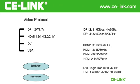For DP 1.2, maximum bandwidth is 21.6 GB per second and the highest resolution is 4K 60Hz. For DP 1.4, maximum bandwidth is 32.4 GB per second and the highest resolution is 4K 60Hz.